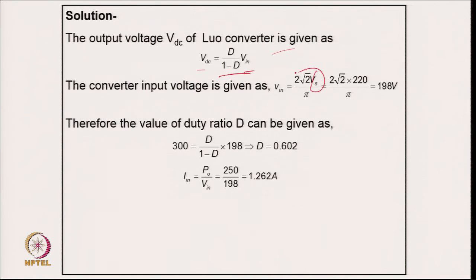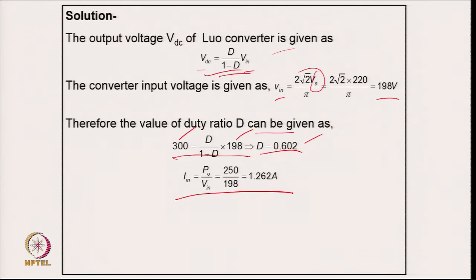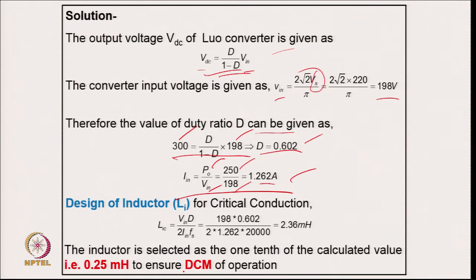Putting in the RMS value to get the average input from the diode rectifier gives 198 V. With output voltage 300 V and input 198 V, the duty cycle comes to D = 0.602, which is above 0.5, confirming boost mode operation. The average input current from power and input average voltage: 250 / 198 = 1.262 A.